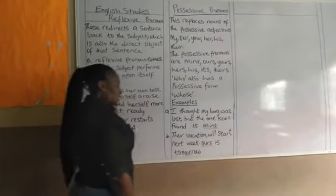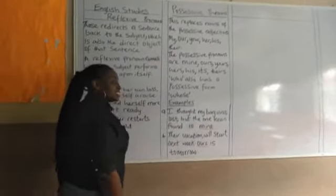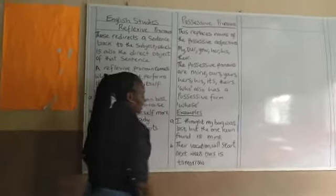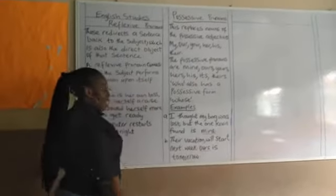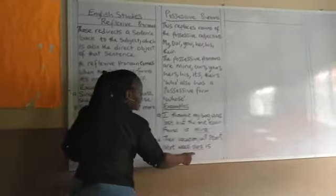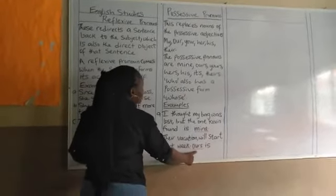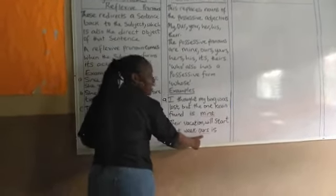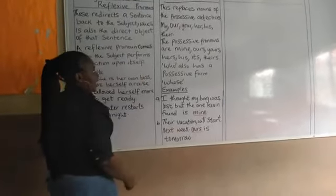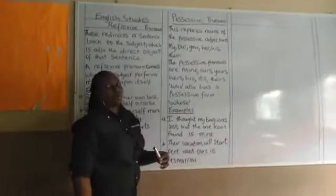Their vacation will start next week. Ours is tomorrow. Remember, I told you that the possessive pronoun replaces the possessive adjective 'our.' So 'ours' here makes the sentence an example of a possessive pronoun.